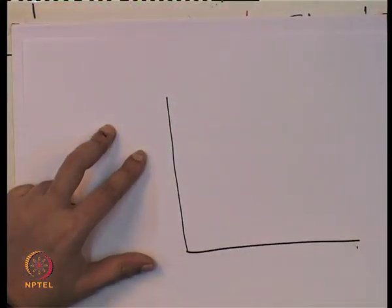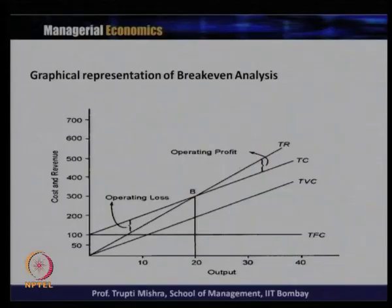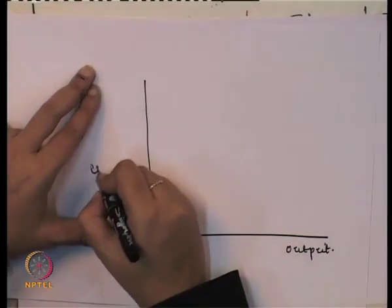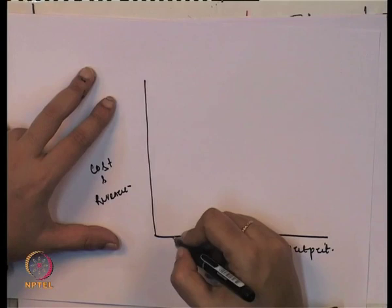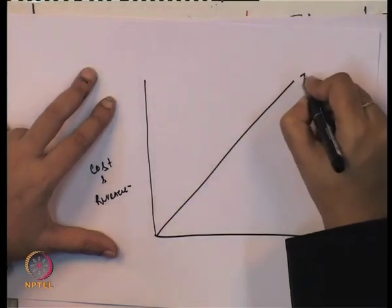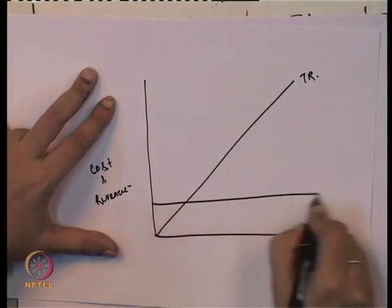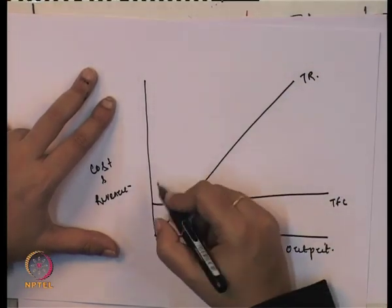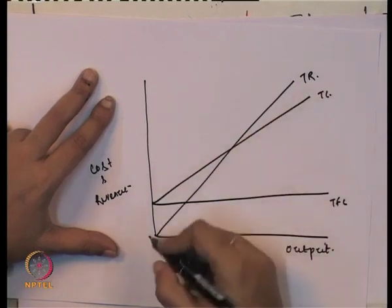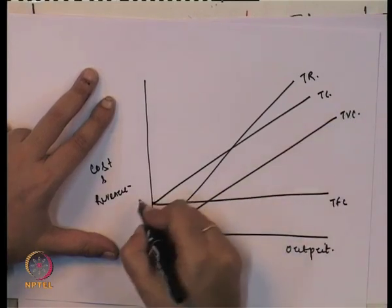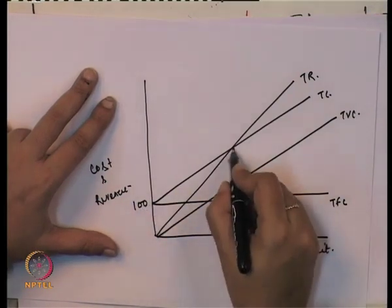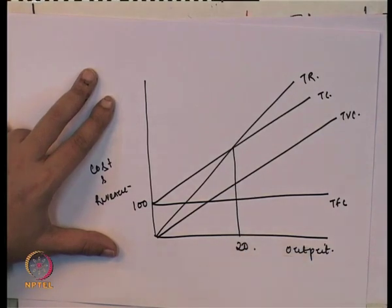Looking at the graphical analysis: output is on the X-axis, while cost and revenue are on the Y-axis. In the graph we have total revenue, total fixed cost, total cost, and total variable cost. The total fixed cost is shown at 100, and the break-even output level is at 20.